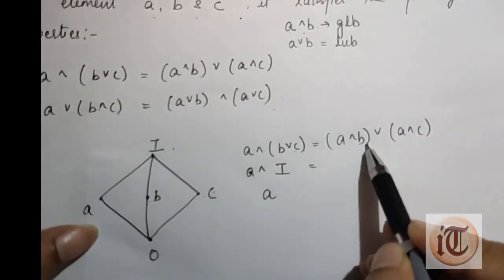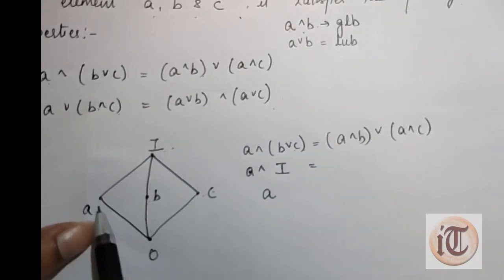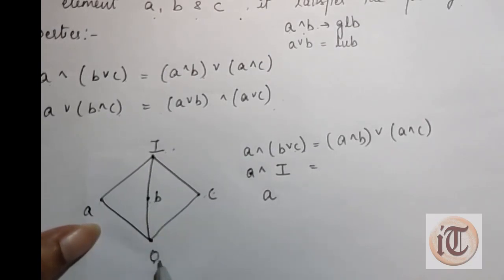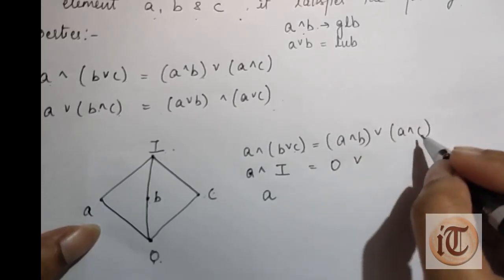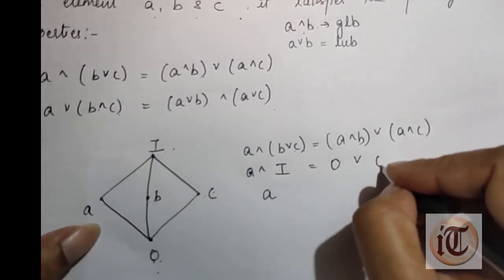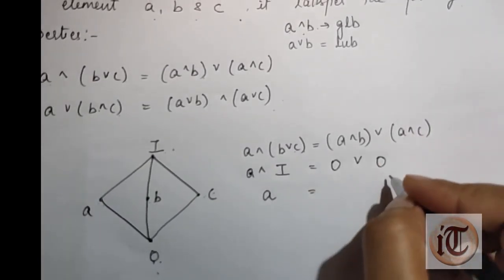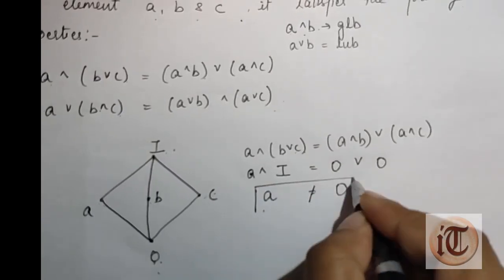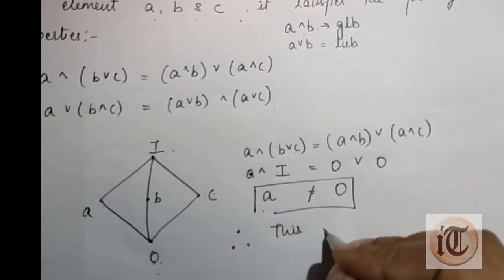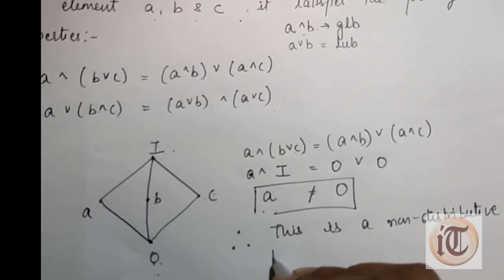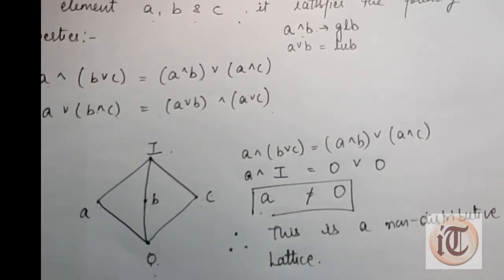Now we find the right-hand side. A ∧ B: the greatest lower bound of A and B is O. Then A ∧ C: the greatest lower bound of A and C also has lower bound O. So O ∨ O: the least upper bound of O and O is O. The left-hand side A is not equal to the right-hand side O, therefore this is a non-distributive lattice.